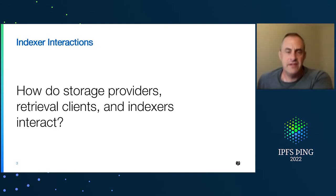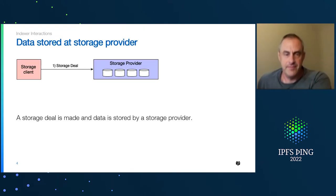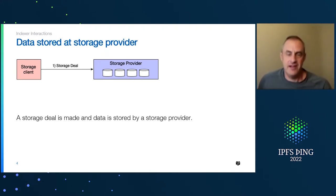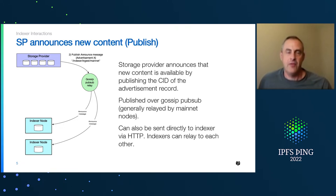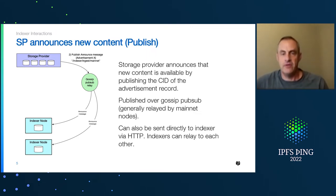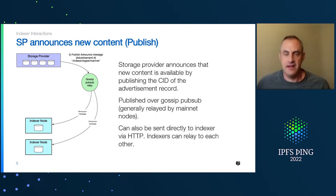How do these different user groups interact with an indexer? A storage deal is created by a storage client, so data is stored on a storage provider. When a storage provider has that data, it's going to announce that it has new content. It does that by publishing the CID of a special record called an advertisement, and it lets the indexers know that it has this new content to be indexed.